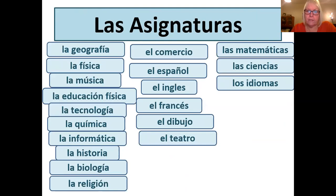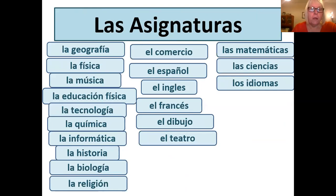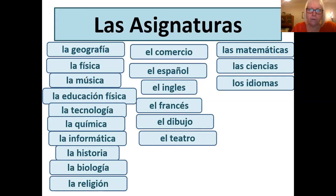Okay, so assuming you've done that, you should now have three groups of subjects. I've put them into these groups by looking at whether they were masculine, feminine or plural. So we've got La Geografía, La Física, La Música and so on — all the feminine subjects first, then the masculine ones. On the right hand side you have the plurals. We've got a lot of cognates there. El comercio is business studies and Los idiomas on the right hand side at the bottom of the list is languages.